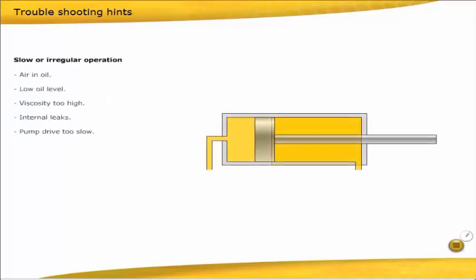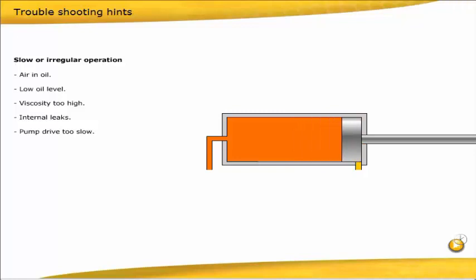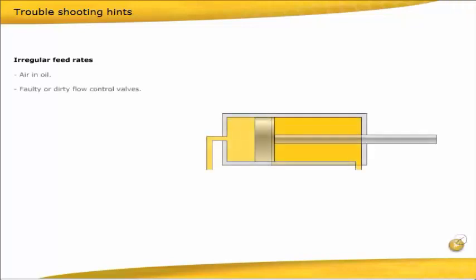Slow or irregular operation. Air in oil. Low oil level. Viscosity too high. Internal leaks. Pump drive too slow. Irregular feed rates. Air in oil. Faulty or dirty flow control valves.